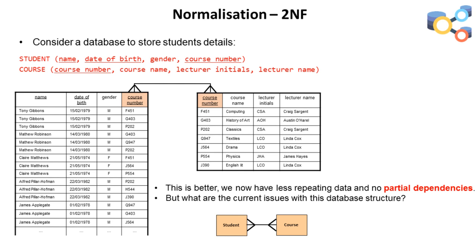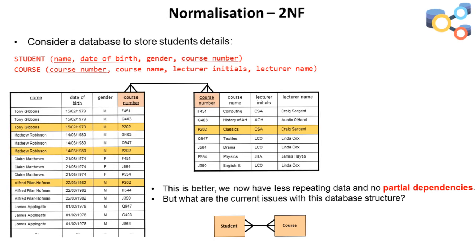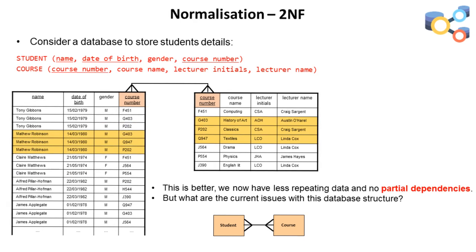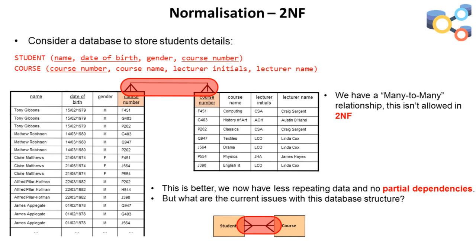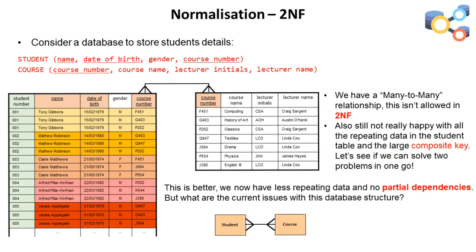When we do the split, course number automatically becomes the primary key in our new table and also remains in the original table as a foreign key. But this has introduced a problem: a course can be taken by multiple students, and one student can take many courses — we've just identified a many-to-many relationship between these two tables in our entity relationship diagram. Many-to-many relationships are not allowed, and this is very important to spot in exams. We're also not happy with all the repeating data in the student table or the large composite key compromise, so let's see if we can solve all these problems in one go.